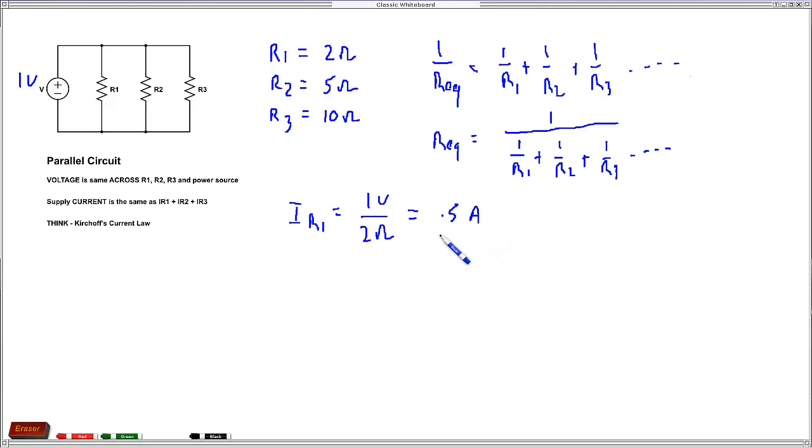So that would be the current through that resistor if we had 1 volt across it. For the second resistor, IR2, we're just going to use our same 1 volt because the voltage is the same across all the resistors. So 1 volt over 5 ohms equals 0.2 amps.